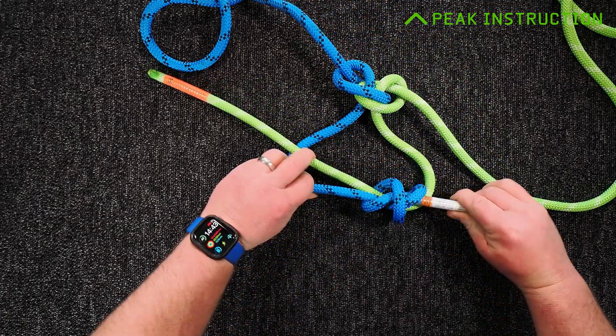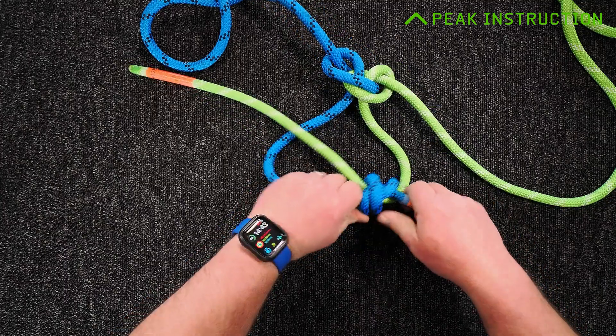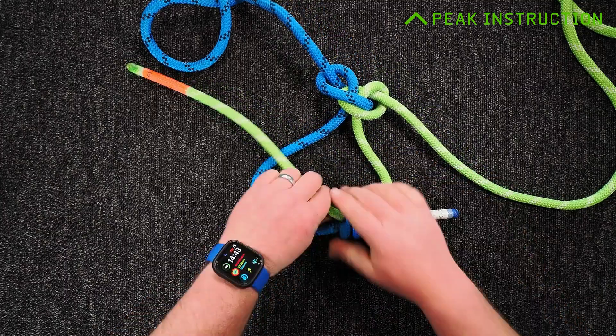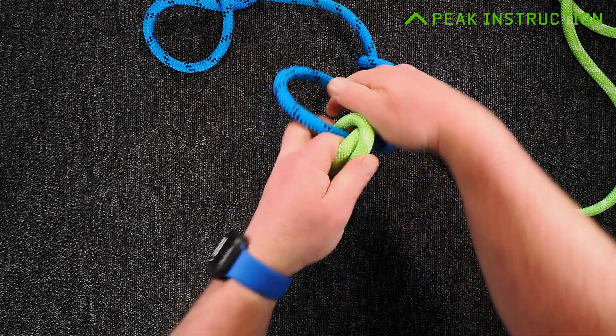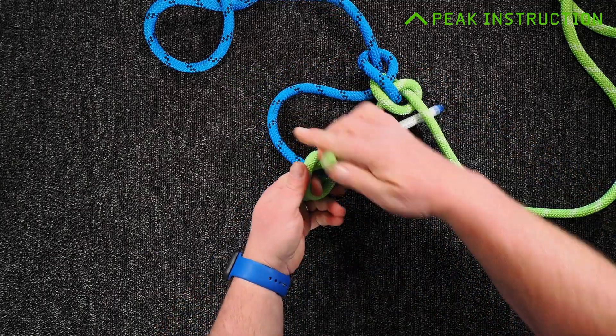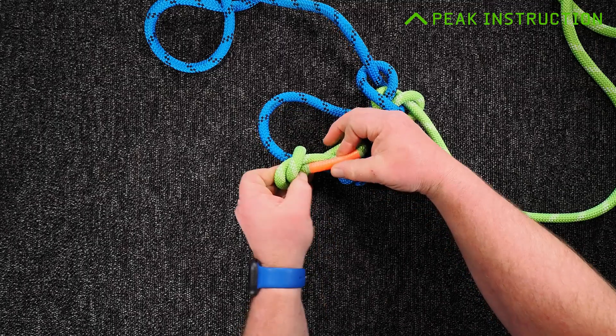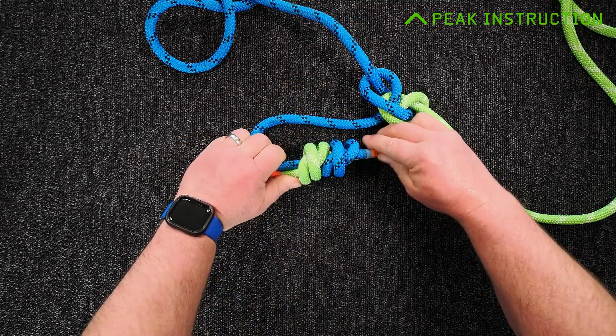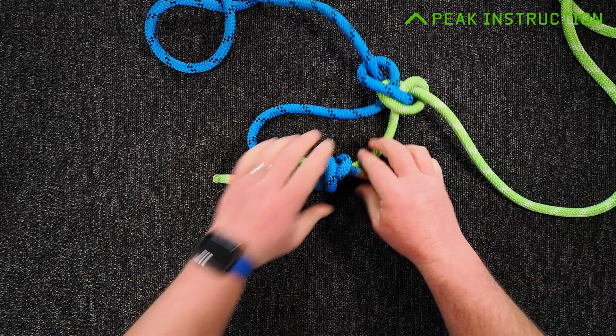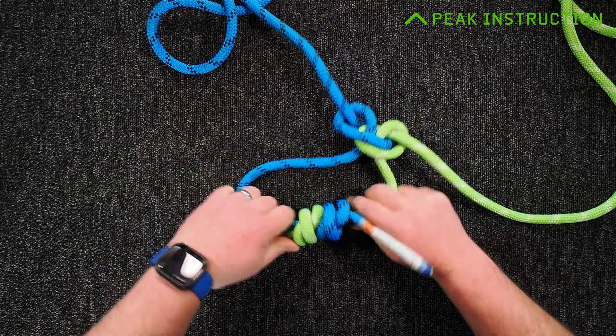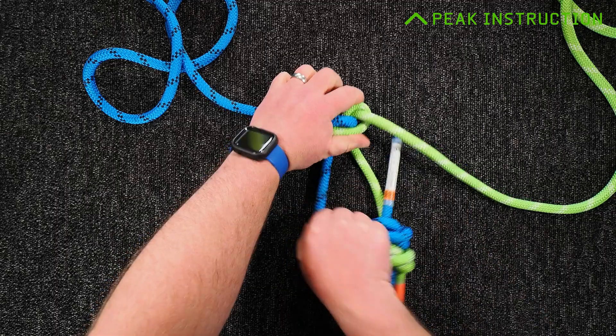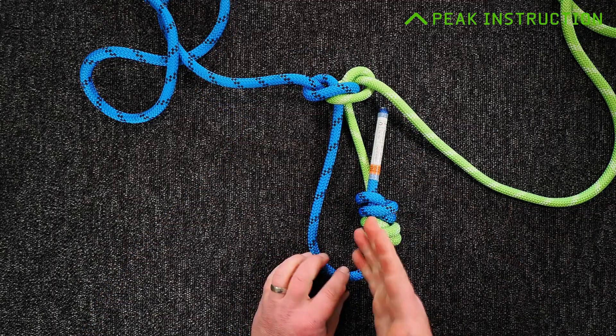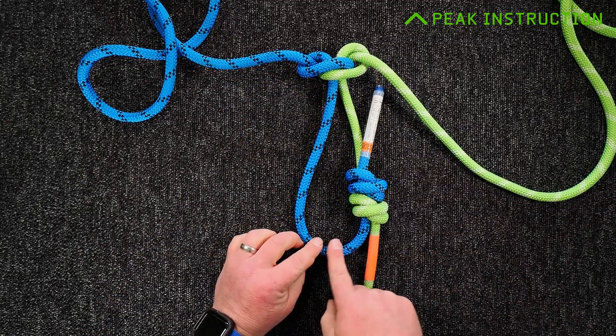We're going to tie our double overhand stopper there around the other strand of rope, and another double overhand stopper there around the first strand of rope. Cinch those together, give them a dress, make sure everything's tightened down. I deliberately try to position the join off to the side of the loop, not at the very end.